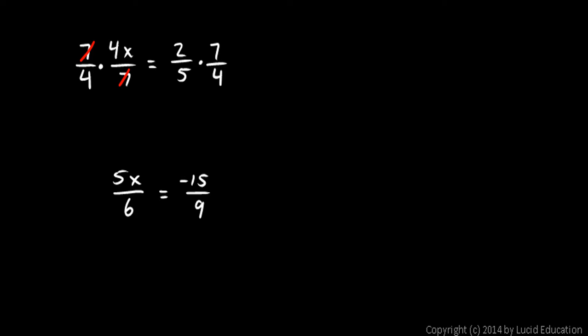On the left, the 7s cancel out and the 4s cancel out, and that leaves us on the left with x equals 2 times 7 over 5 times 4.